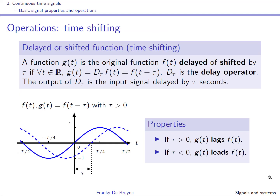In this slide we consider time shifting by a quantity tau, where tau is assumed to be positive. We have f of t, and g of t is a delayed version of f of t by a quantity tau. At t equals tau, g of tau equals f of zero. When tau is positive, this leads to a shift to the right, so g of t is lagging f of t. If tau is negative, you would have a shift to the left, and g of t would be leading f of t.